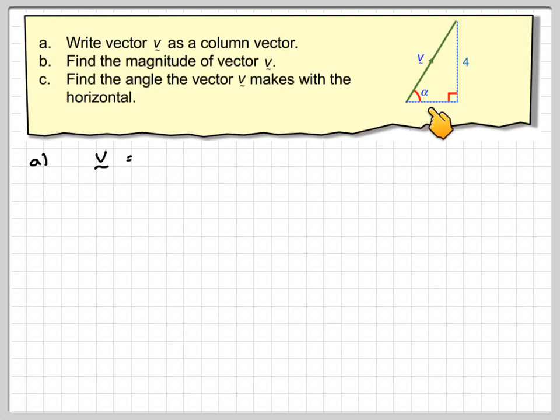So, vector v goes 3 along, so you draw, make a sort of matrix, 3 along, and 4 up. And therefore, this has now been written as a column vector.